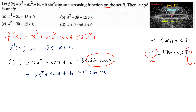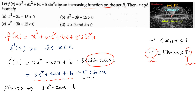To get f'(x) > 0, we must ensure that even in the worst case, the expression remains positive. So we must have 3x² + 2ax + b, and even if we subtract 5 (the minimum of 5sin2x), it should still be positive. That is the minimum condition: 3x² + 2ax + b - 5 > 0.